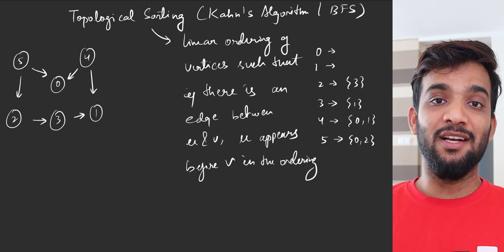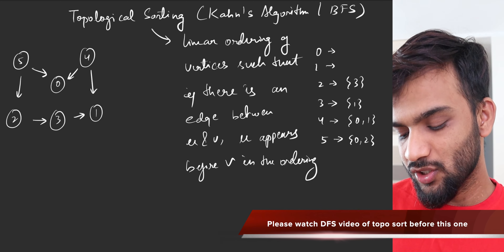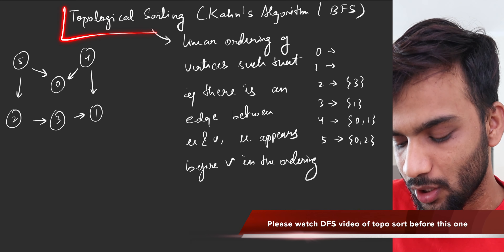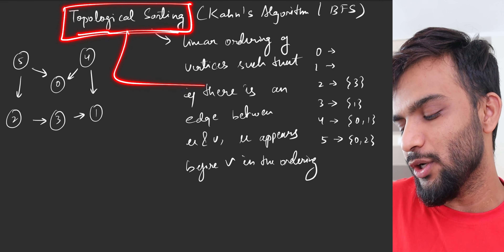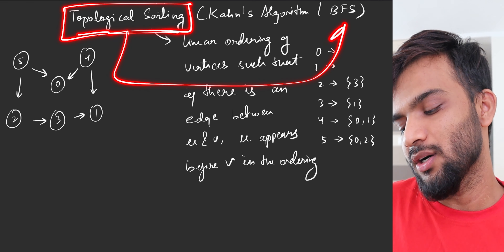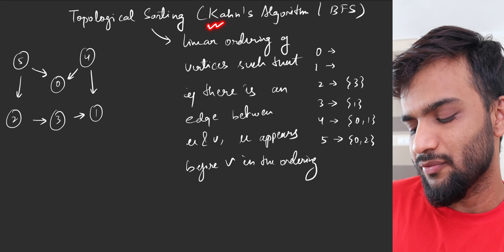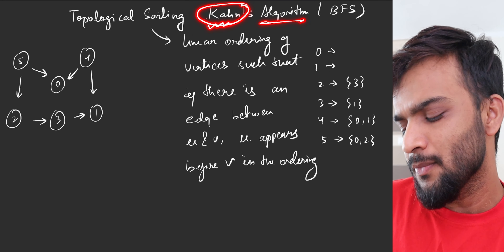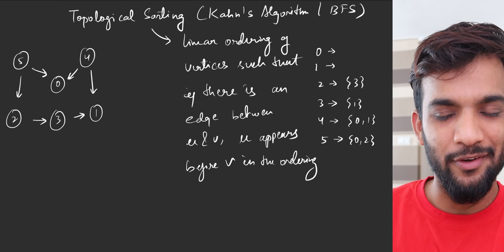Hey everyone, welcome back to the channel. In this video we're going to learn about topological sorting using the BFS algorithm. We have done the DFS algorithm in the previous video, and this BFS-based algorithm is famously known as Kahn's algorithm.